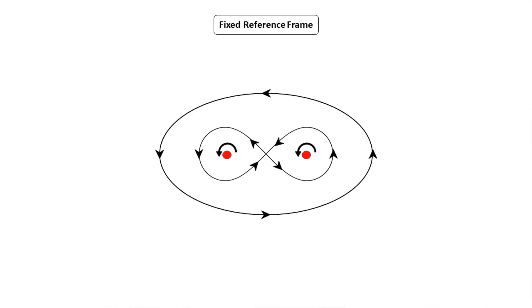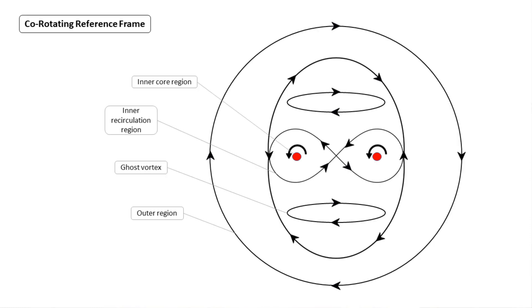During the convective stage, what actually drives the two cores together? To investigate further, you need to look at the flow field, where we can see a saddle region in the centre and an outer circulation. However, this is drawn in a fixed frame. Since the vortices are rotating about each other, it's actually more beneficial to draw them in a co-rotating frame.